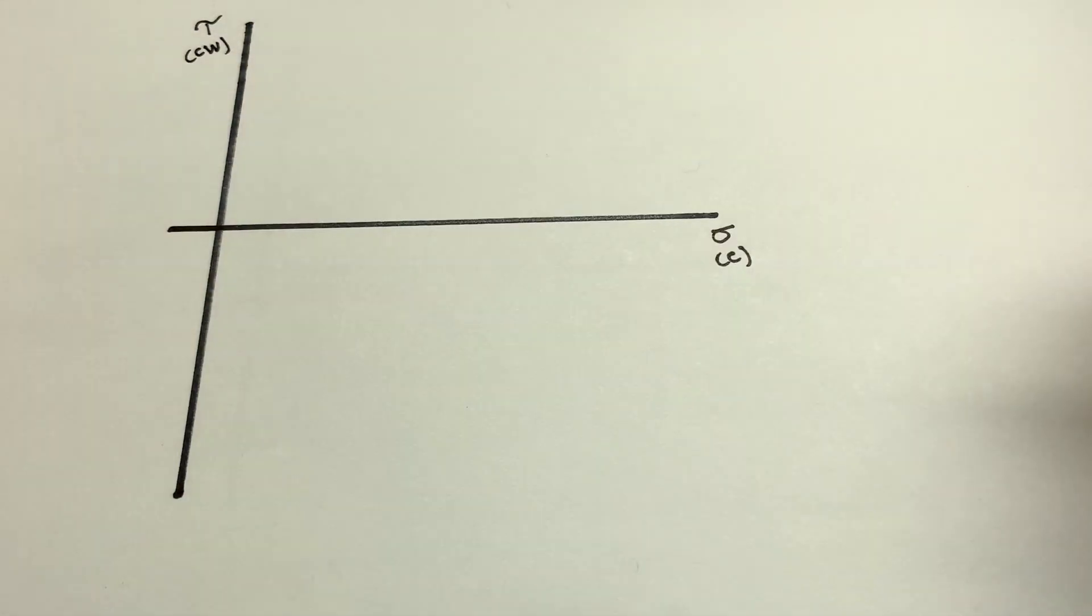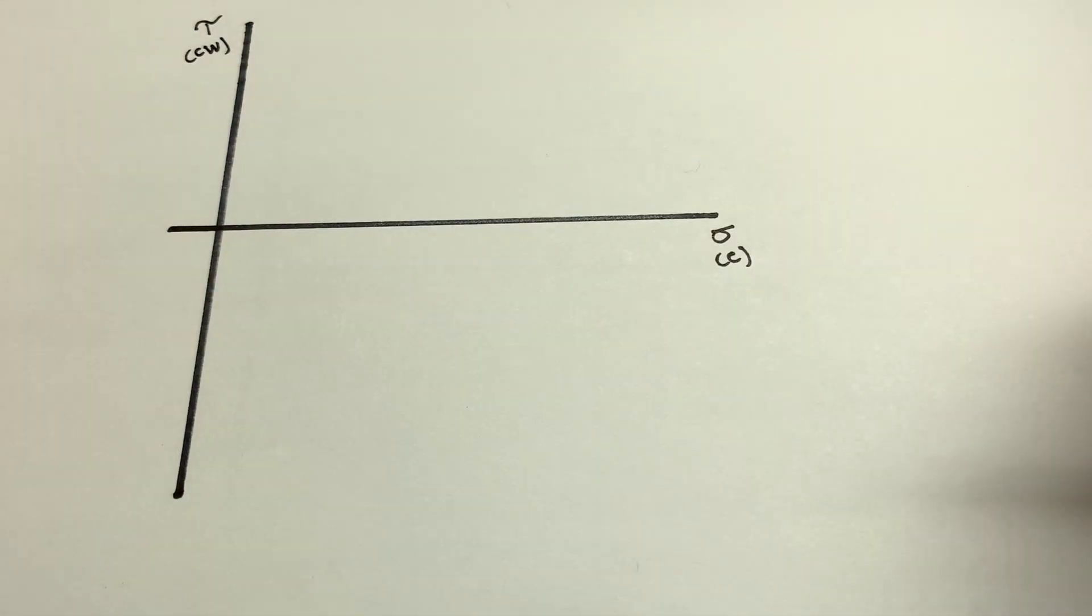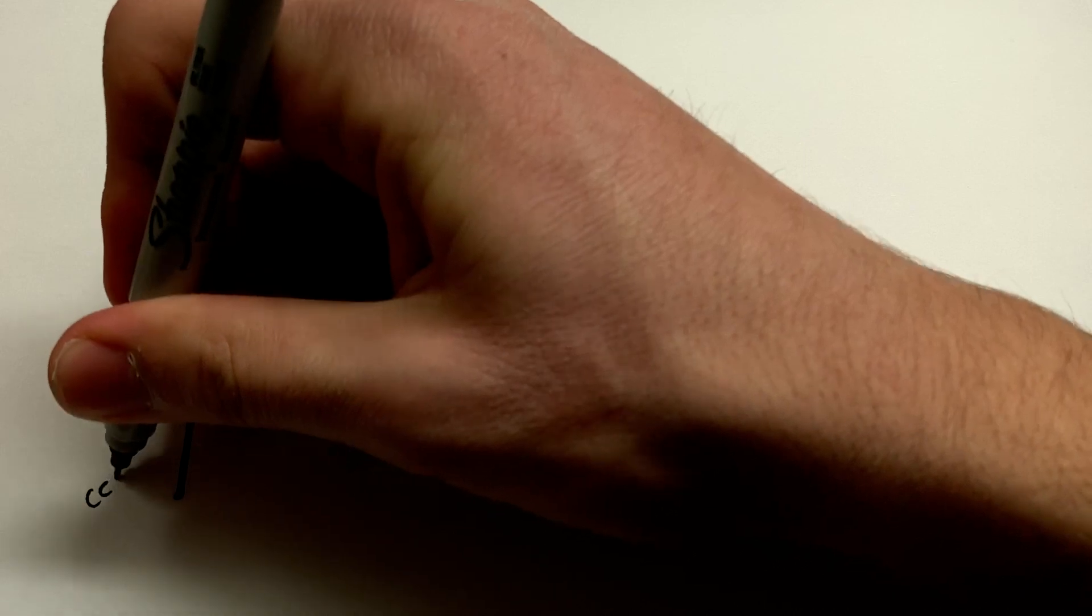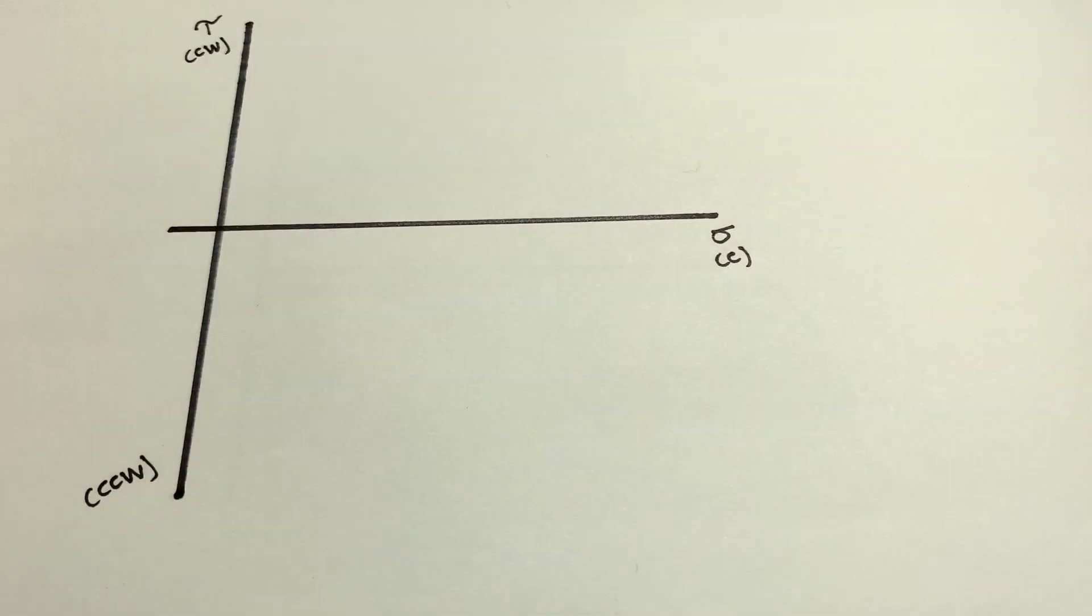Similarly, we're going to define positive tau to be clockwise and negative tau to be counterclockwise, which is, again, different.